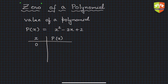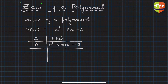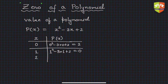When x is zero, the polynomial becomes zero squared minus three times zero plus two, which is 2. Next, if x equals 1, it becomes 1 squared minus 3 times 1 plus 2, which equals zero. If x equals 2, it becomes 2 squared minus 3 times 2 plus 2, which also becomes zero.